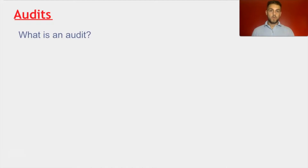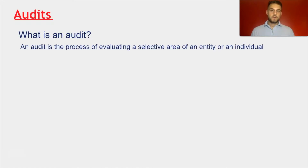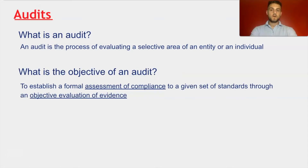To start, what is an audit? An audit is the process of evaluating a selective area of an entity or individual. The goal of an audit is to establish a formal assessment of compliance to a given set of standards through an objective evaluation of evidence.